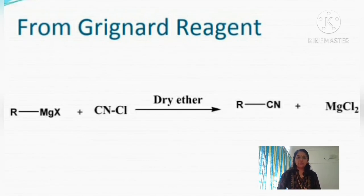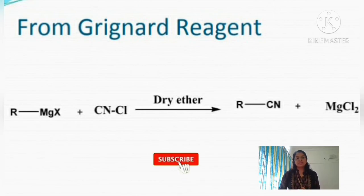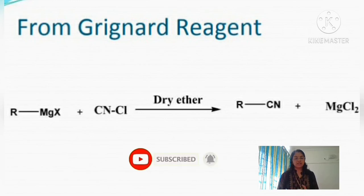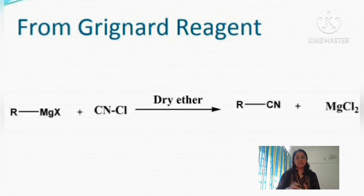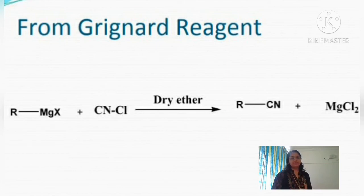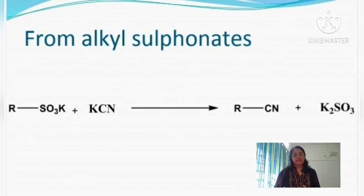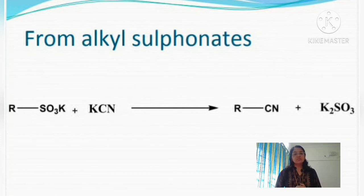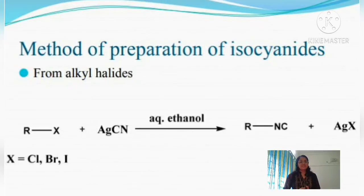Cyanide compounds can also be prepared from a Grignard reagent (RMgX). When RMgX is treated with cyanogen chloride (CNCl) in the presence of dry ether, MgXCl is eliminated and the cyanide gets attached to the alkyl group, giving a cyanide compound. Additionally, from alkyl sulfonate, the potassium salt is treated with potassium cyanide; the cyanide attaches and potassium sulfate is removed, yielding alkyl cyanide.